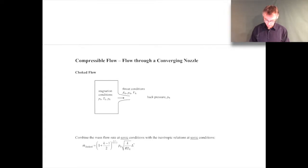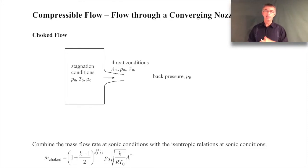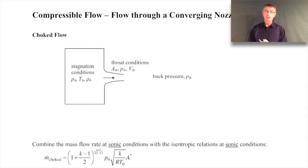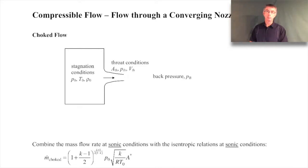We're going to talk about flow through a converging nozzle. One of the first interesting phenomena is choked flow. If you pressurize a tank — at stagnation conditions with nominally zero velocity — and attach a converging nozzle, choked flow means that as you decrease the back pressure you'll get flow, but there will come a point where you reach a maximum flow rate out of the nozzle. You can't get any higher flow rate by further changing the back pressure.